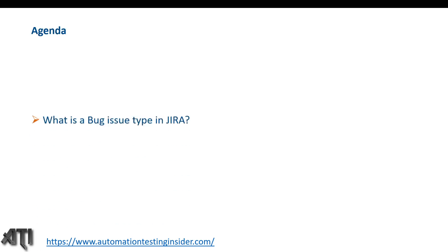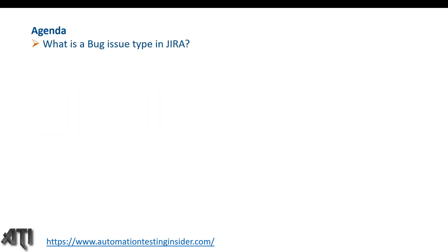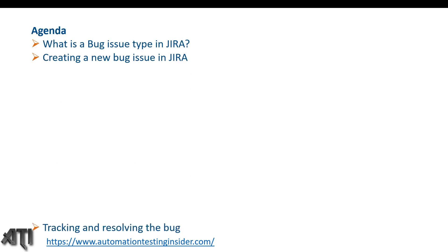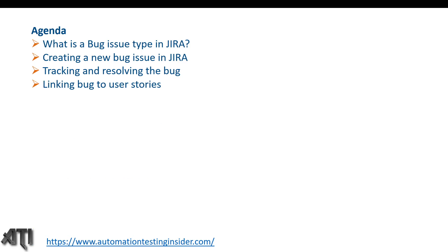Let's look at the agenda for today. We are going to talk about what is the bug issue type in Jira, how we can create a new bug issue in Jira, how we can track a bug issue type, how it will be resolved by the development team, and how we can link a bug issue to a user story.